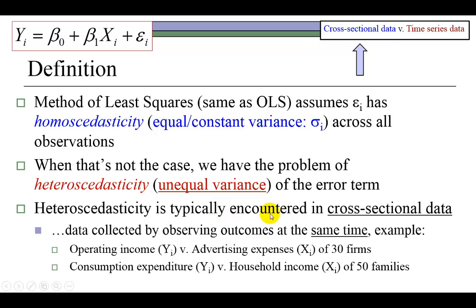This type of problem is typically encountered in cross-sectional data. The two types of data we typically work with in econometrics are cross-sectional and time series. In the case of cross-sectional data, where the data are collected by observing the outcomes at the same point in time, we have examples such as operating income of firms regressed against their advertising expenses, or the consumption expenditure of households regressed against their household income at a particular time period. In such cases, the variability in the dependent variable with respect to the independent variable can cause heteroscedasticity to be a problem.